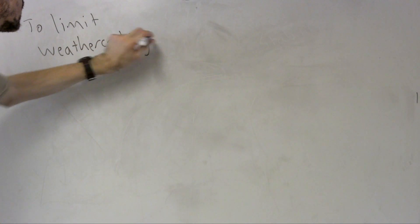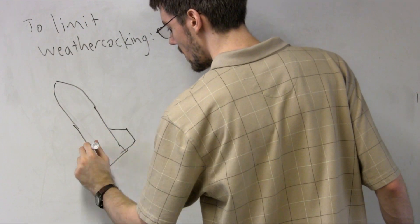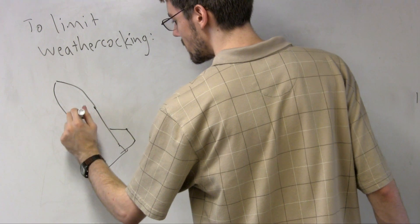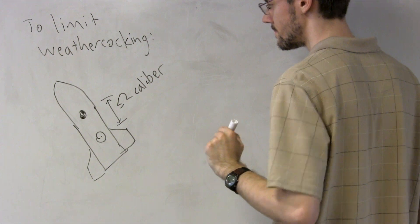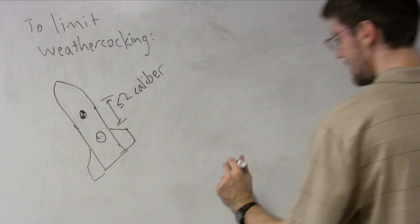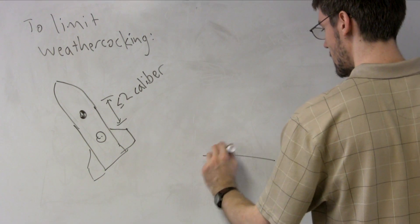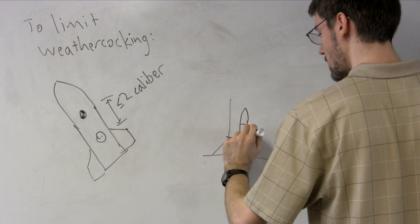A good rule of thumb is to limit the static margin to no more than two calibers. We can also limit weather cocking by only launching on calm days, or in calm moments of windy days, so that there is less wind to influence the rocket's flight. Unfortunately, we don't always have the luxury of controlling every aspect of our rocket's designs or launch conditions, so sometimes we just have to launch on windy days, especially if a deadline is approaching.